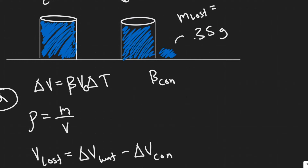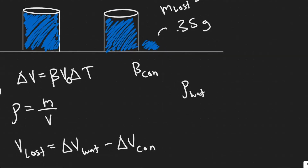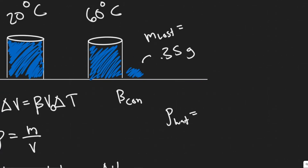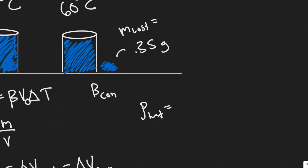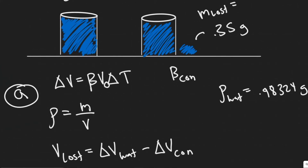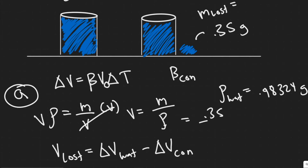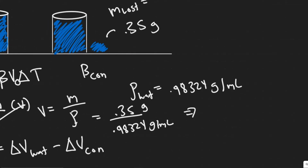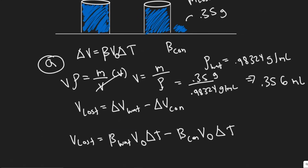The first thing we'll do is solve for the volume lost of the water. They give us the mass, and we're also given the density of water at 60 degrees Celsius, which is 0.98324 grams per milliliter. Since density equals mass over volume, V equals M over rho: 0.35 divided by 0.98324 gives us 0.356 milliliters. So the volume lost is 0.356 milliliters.